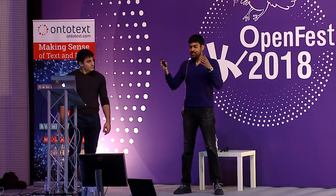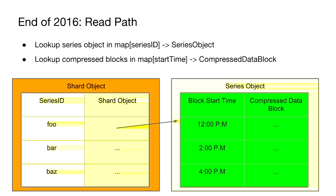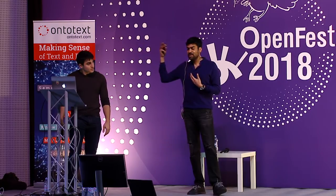The data read path: everything is in memory — two maps. The first map goes from the series identifier — that unique combination of all tags like city, iOS version, Android version, and which metric — to a series object. The series object maps to those periodic compressed blocks, e.g., all data from 12 p.m. to 2 p.m. as M3TSZ compressed blocks. To serve a read or write, you go to this memory structure, get a lock, and give data back to the user. Never disk — and it works really well.